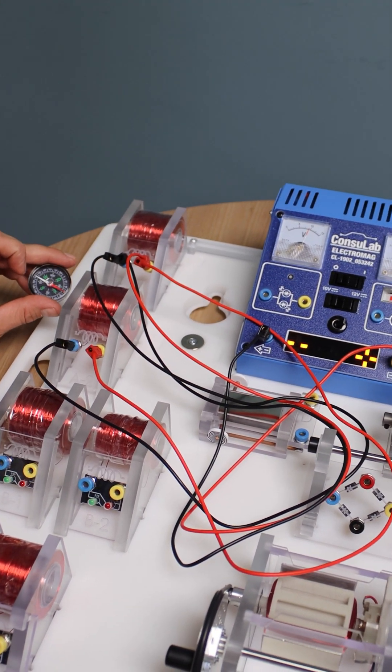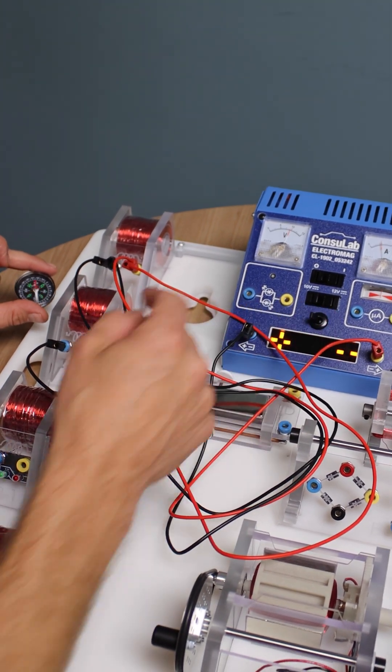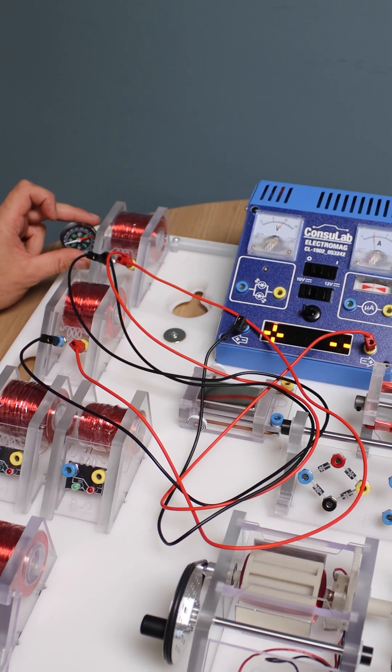This coil is attracting the north, south and north. If I invert my polarity of the voltage, this one will attract the south, this one will attract the north.